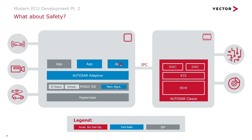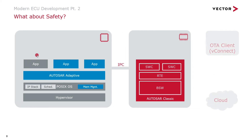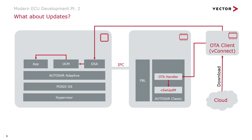Now let's come to one of the killer features of these modern ECUs: over-the-air updates. A backend server prepares software packages which an OTA client on the vehicle downloads and then distributes to the different microcontrollers and microprocessors.